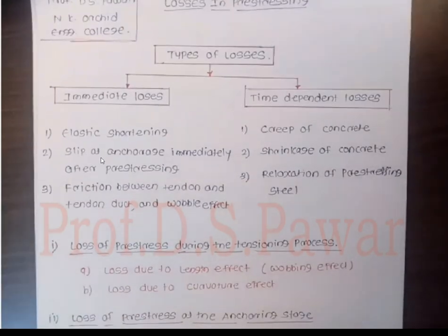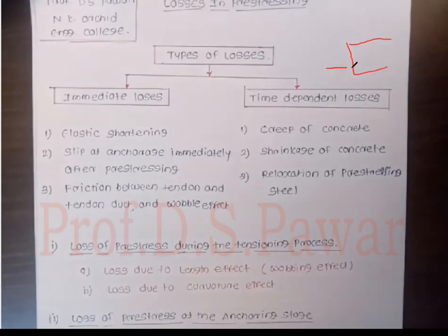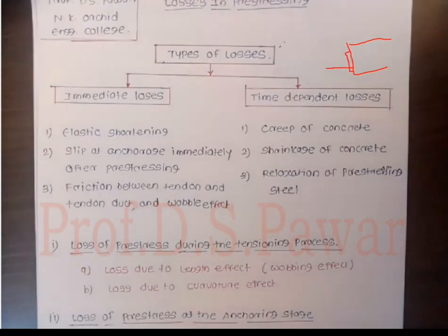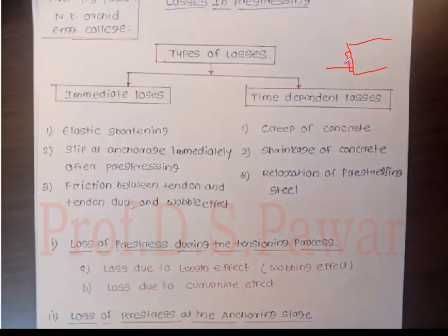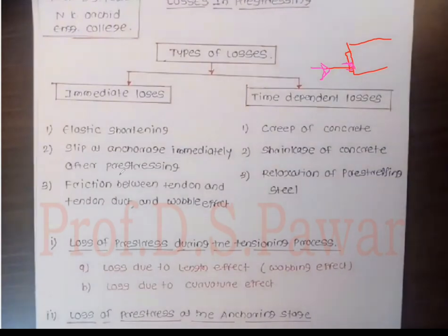Already I have told you, when we are going to do the tensioning process, there are chances of slip at the anchorages. When you provide the anchorages at the edges of the beam during the tensioning process, wedges are provided at the time of applying the pre-stress force. In that case there are chances of slip at the anchorages, and that loss we have to consider.